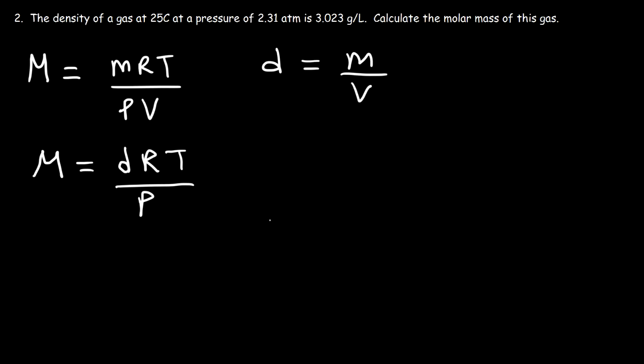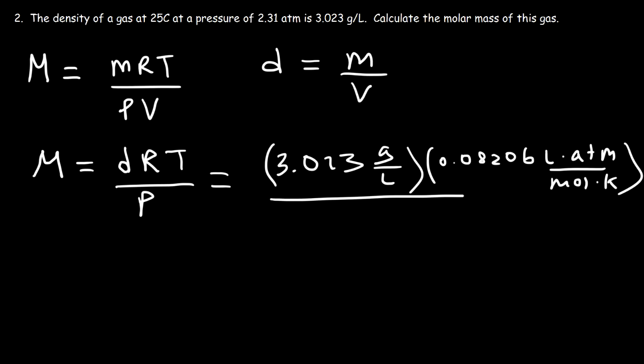So now, all we need to do is plug in the information that we have. The density is 3.023 grams per liter. R is 0.08206 liters times atm divided by moles times Kelvin. The pressure is 2.31 atm.